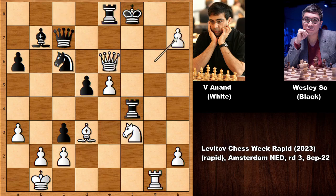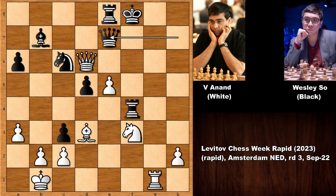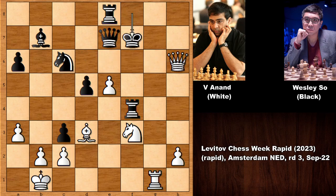After gxh7, you might wonder what happens if queen takes on h7 as an in-between move. If capturing the queen, capturing the queen — the solution is very simple. Queen to d6 check, queen to e7, and then queen to h6 check, king to f7, queen to g6, king to f8, and then queen to g8 check — mate. There is no defense.